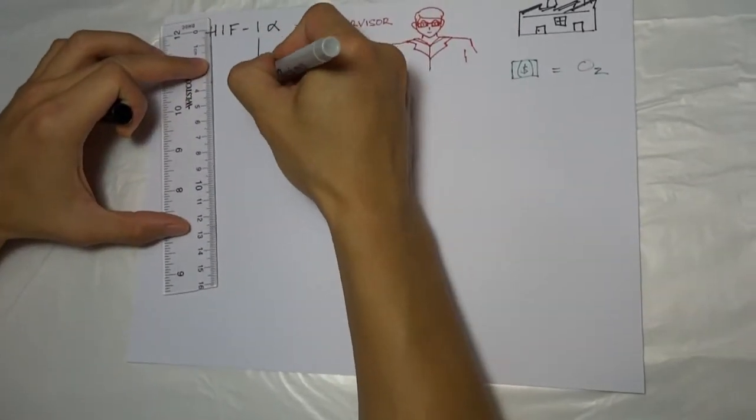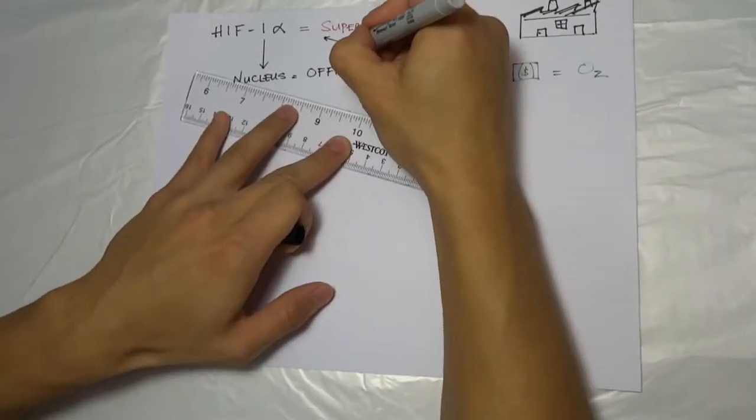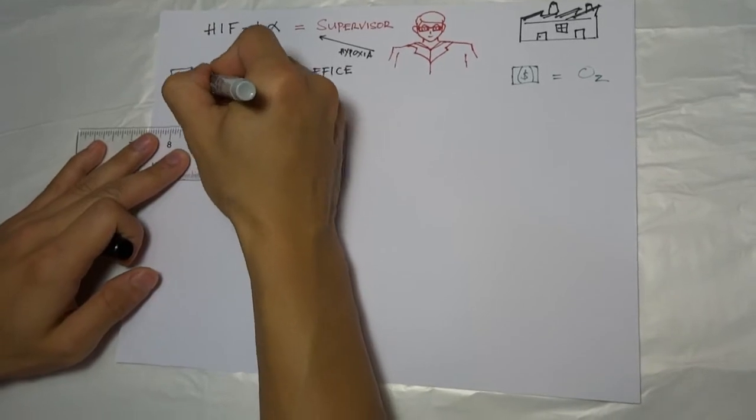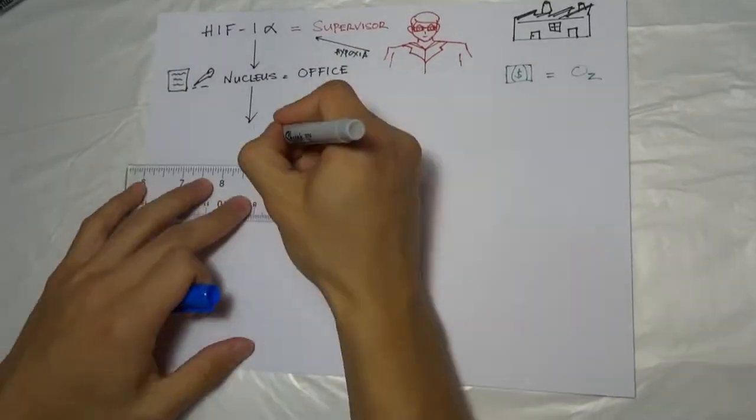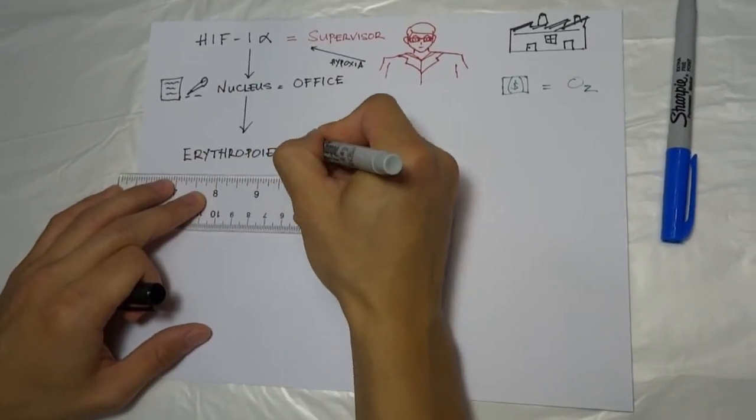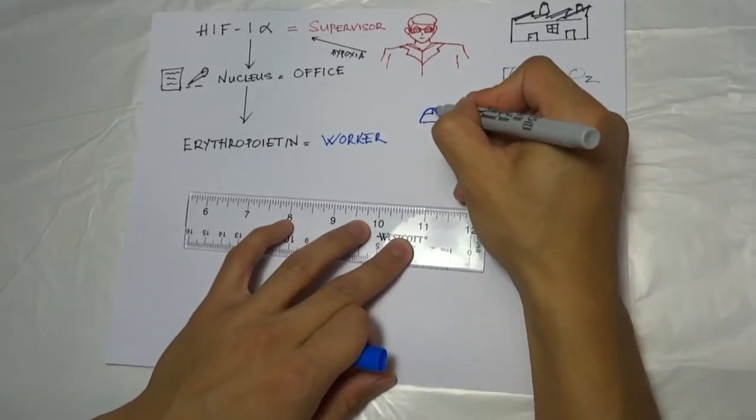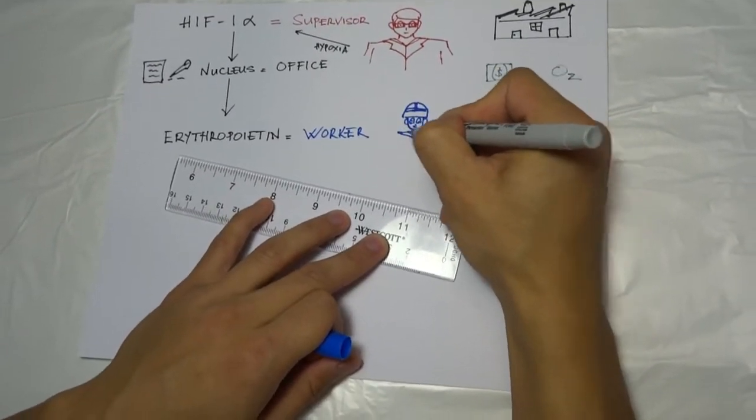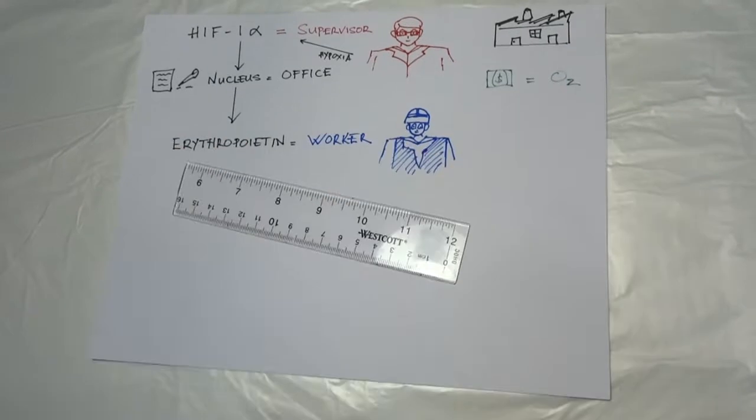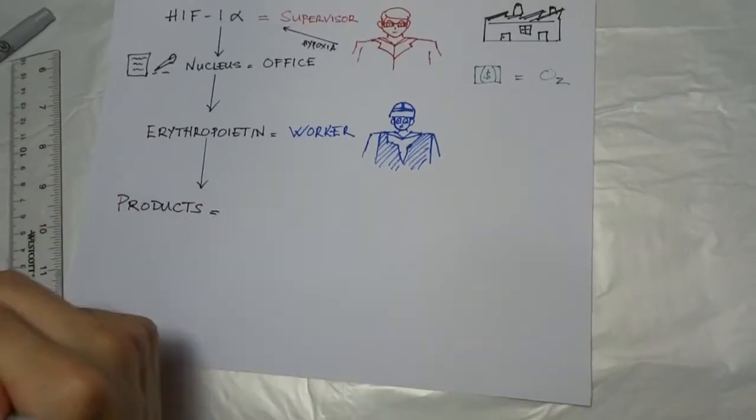In the case of low money or oxygen, the supervisor is very proactive and will go to his office, which is the nucleus, to write up new production orders or transcription. Once the new orders are written, his worker, erythropoietin EPO, will start making products which are red blood cells.